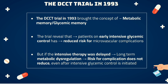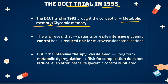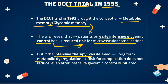One of the most important trials is the Diabetes Control and Complications Trial (DCCT), which took place in 1993. This DCCT trial gave a very important concept known as metabolic memory or glycemic memory. As per this trial, if a diabetic patient is on early intensive glycemic control, there are reduced chances and reduced risk for development of microvascular complications. But if such intensive glycemic control has already been delayed and there are long-term metabolic dysregulations, there will be no decrease in risk for complications and higher chances of developing microvascular complications.